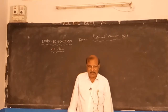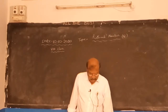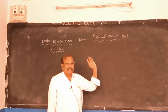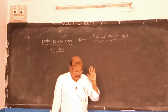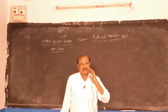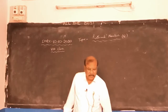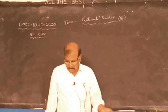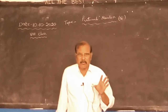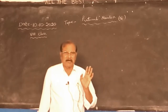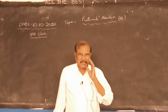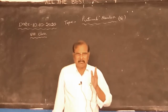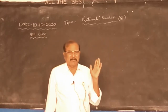Good morning children. Now we are learning rational numbers. Rational numbers are nothing but fractions which are in the form of P by Q, where Q is not equal to zero. So we must learn the four fundamental operations: addition, subtraction, multiplication and division of rational numbers.